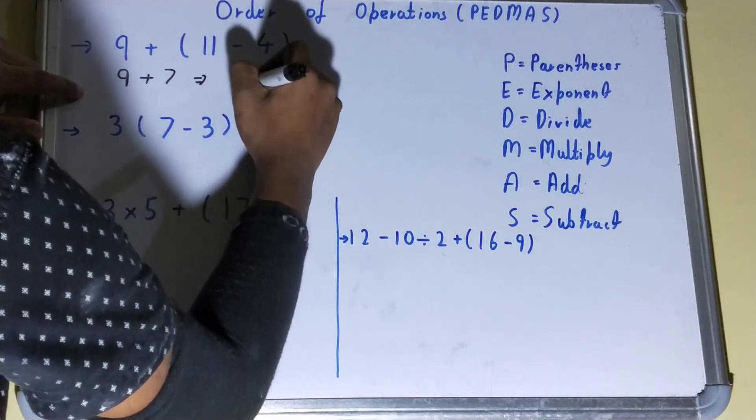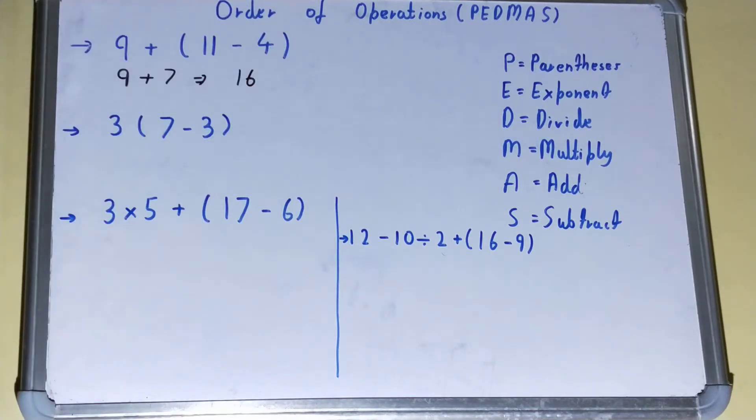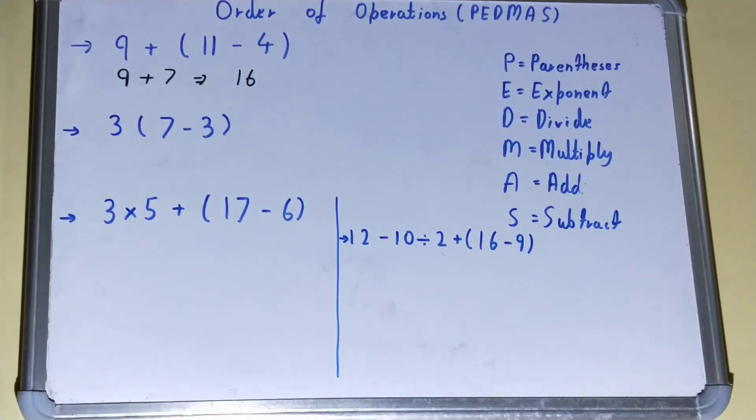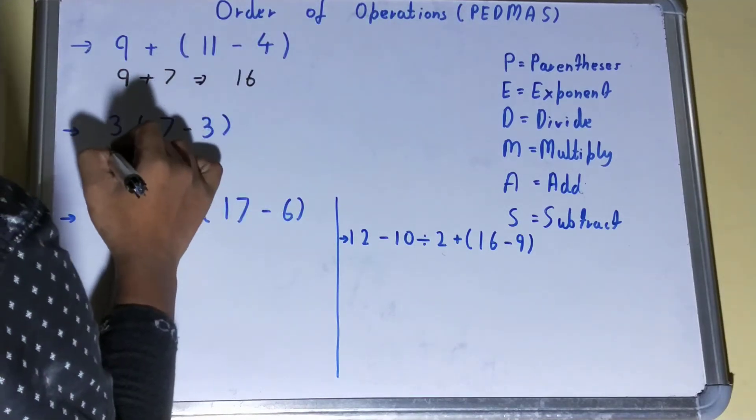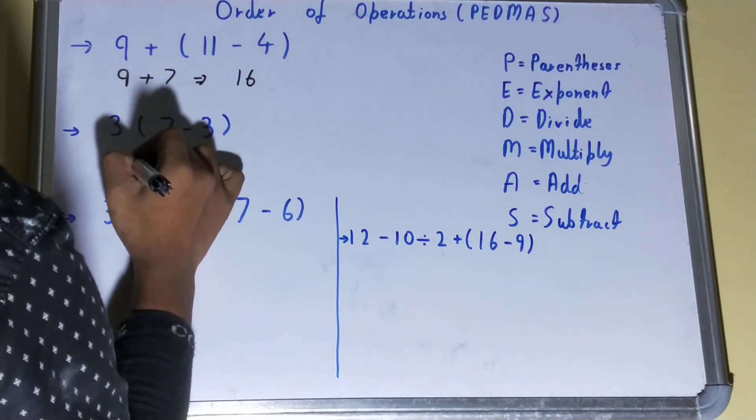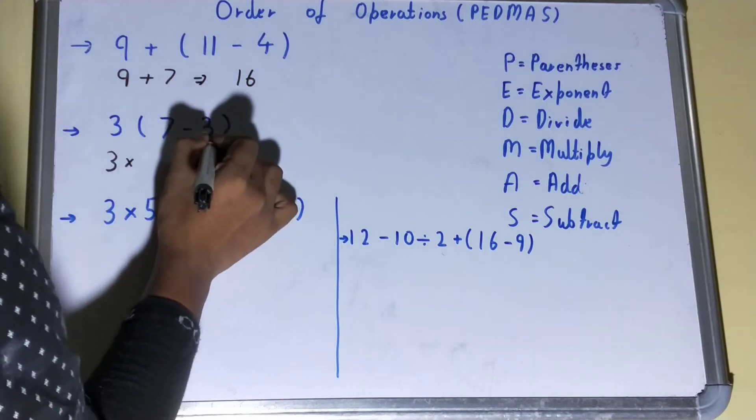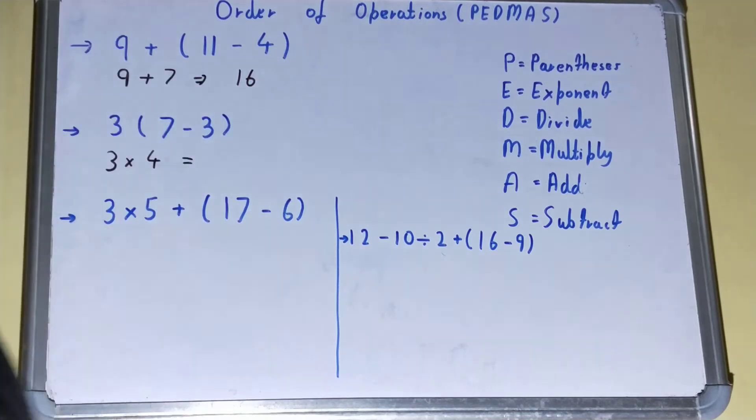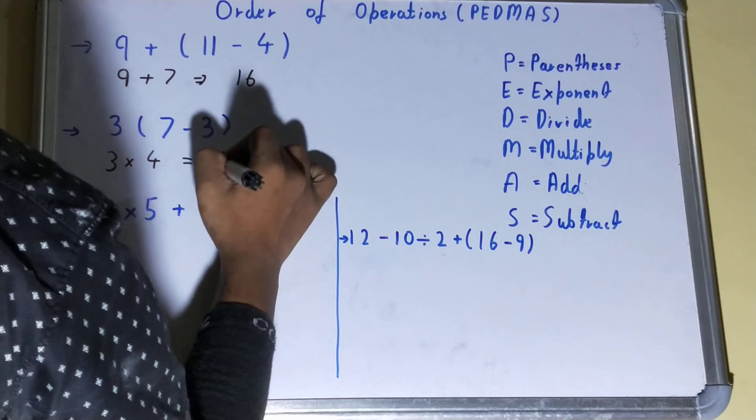Let's go on to the second one. The level is increased. In this one, again parenthesis is there. Parenthesis has the highest priority, so it will be 3 × (7 - 3). 7 minus 3 will be 4, right? Now we have the multiplication, so we'll do the multiplication. 3 × 4 = 12.